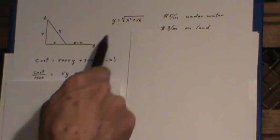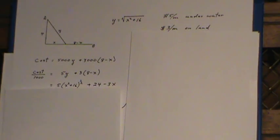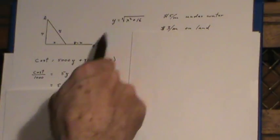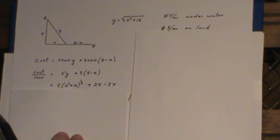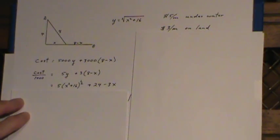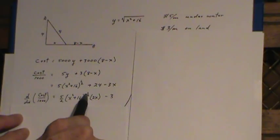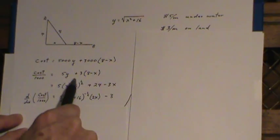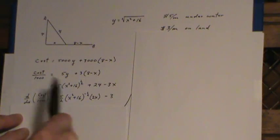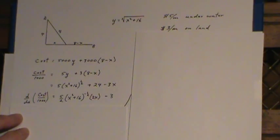So we're going to replace the Y with X squared plus 16. I wrote it to the half because I'm getting ready to take a derivative. I brought the 3 into the bracket. It just makes it a lot easier taking the derivative. So here's the derivative of the cost. The half comes down. That becomes 5 halves. Half drops to negative 1 half. The derivative of what's inside is 2X. That's just the chain rule. This constant disappears, and the derivative of this is negative 3. And we're going to put that derivative equal to 0.